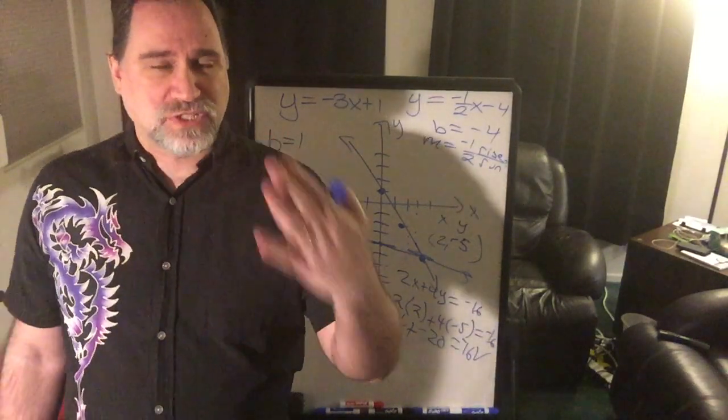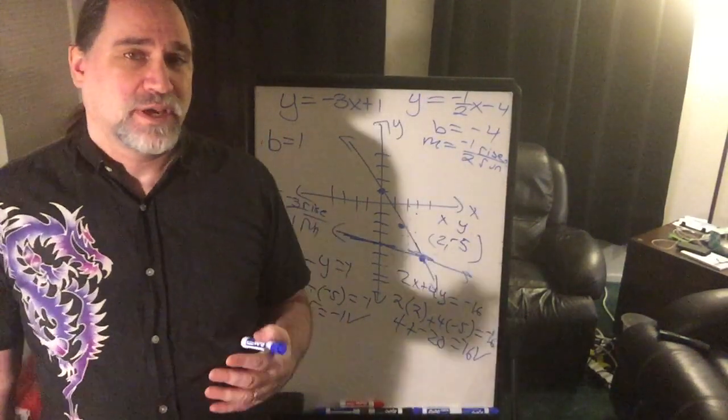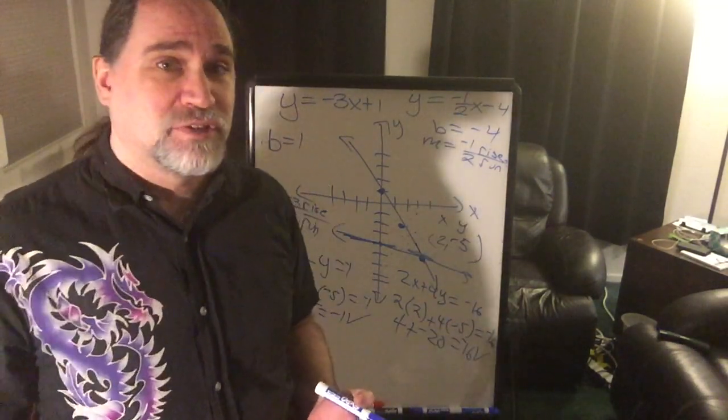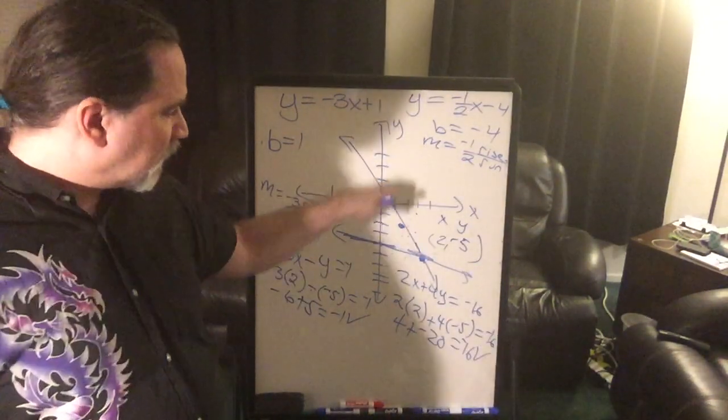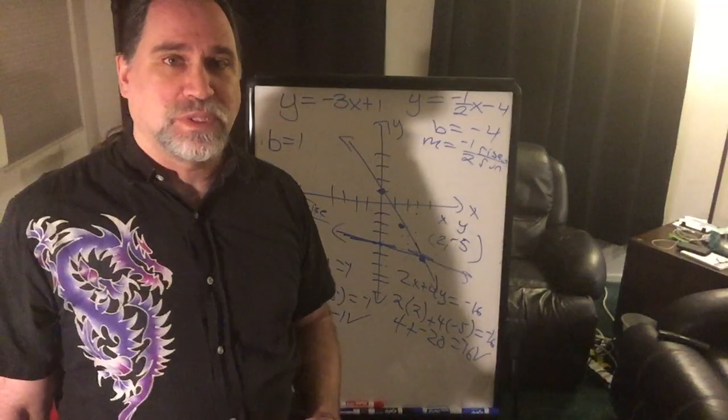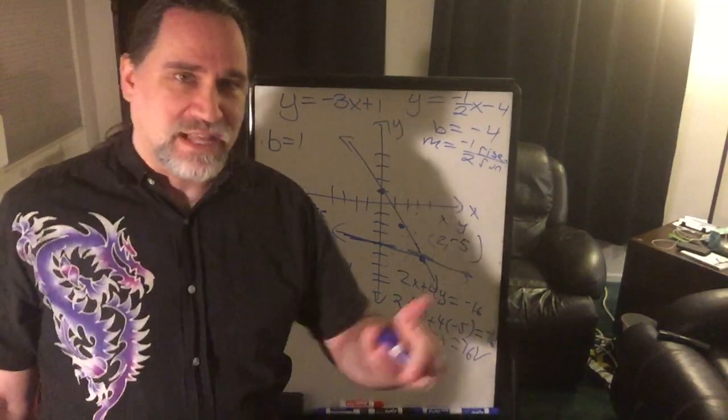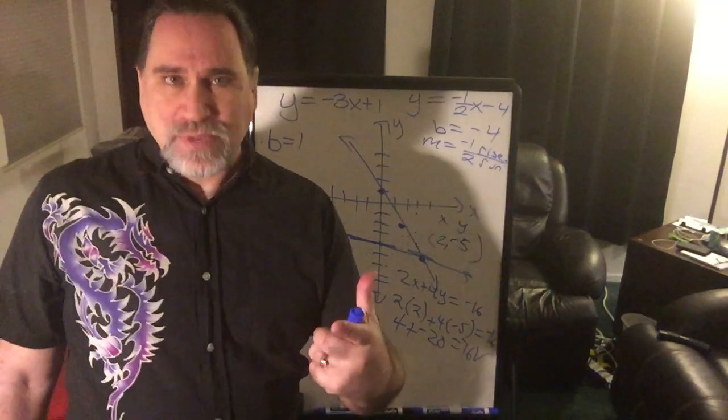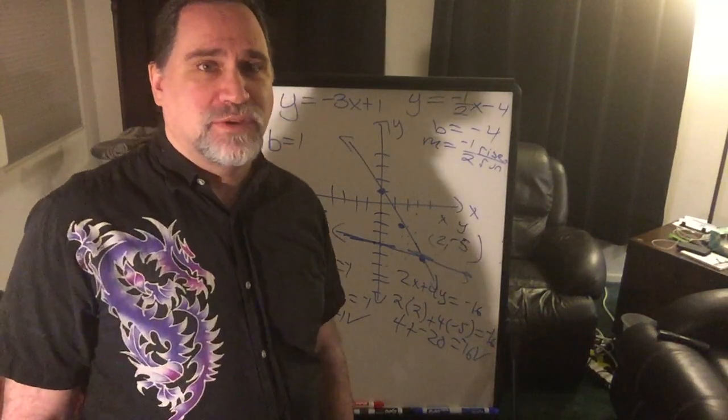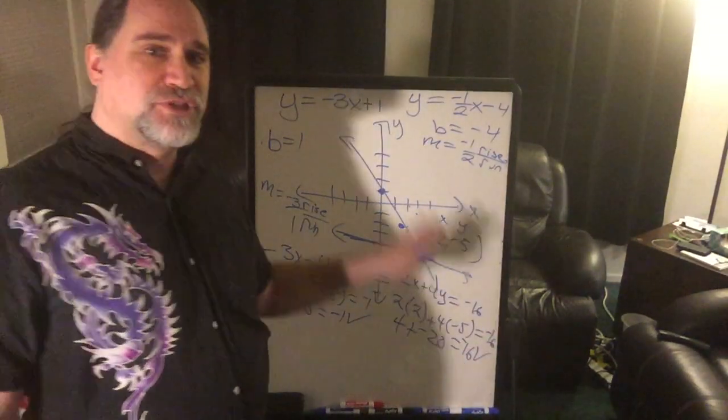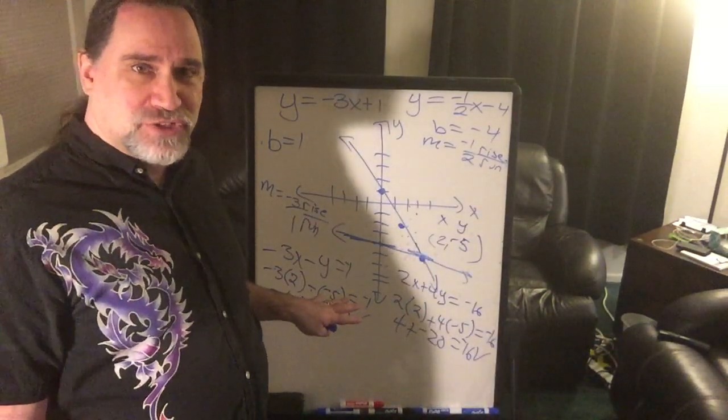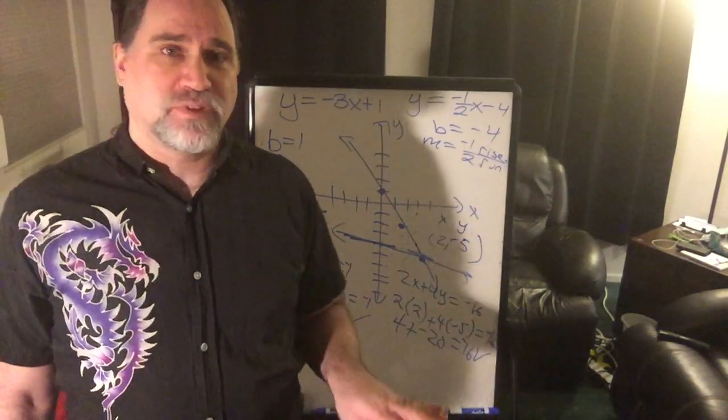In order to solve by graphing, you obviously need to graph. So you need to graph the two equations on the same graph. Figure out where they intersect visually. Look at it. Say, that's the spot. Now, then name it. Give it its point value, its coordinates, its x and its y.